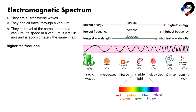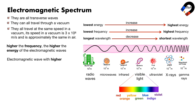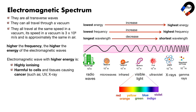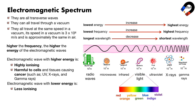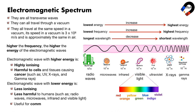The higher the frequency, the higher the energy of the electromagnetic waves. Electromagnetic waves with higher energy are highly ionizing and harmful to cells and tissues, causing cancer — such as UV, X-rays, and gamma rays. Electromagnetic waves with lower energy are less ionizing and less harmful to humans — such as radio waves, microwaves, infrared, and visible light — and are useful for communications.